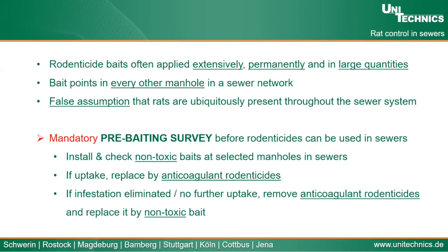In general, rodenticide baits have been used intensively, permanently, and in large quantities based on the false assumption that rats can be everywhere in our sewer systems — used at every other manhole in the sewer network. Because of this, we are now asked to have a mandatory pre-baiting survey before any rodenticide control campaign. First we need to install and check non-toxic baits at selected manholes. This regular checking can be done manually or using sensors, with data transferred to our phone or computer. When there is uptake of the non-toxic baits, we replace them with the toxic anticoagulant rodenticides.